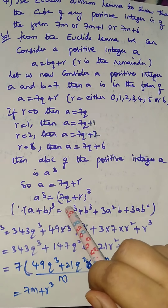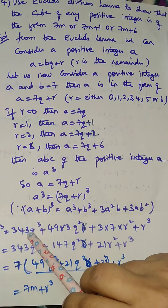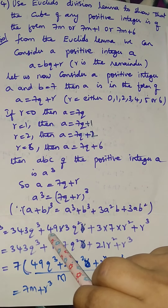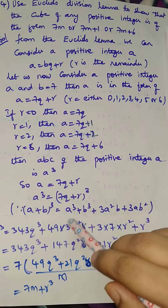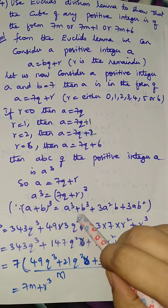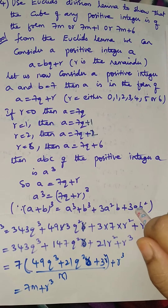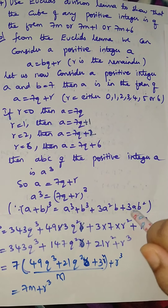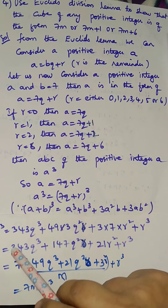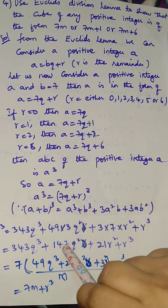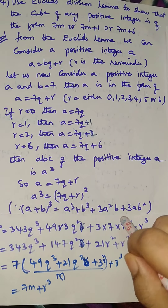We have to substitute the values. A is 7q. 7 sevens are 49, 49 sevens are 343, so we get 343q³ plus 49 — that is, 3 times 49 is 147 — 147q²r, plus 3 times 7 is 21, so 21r², plus r³.